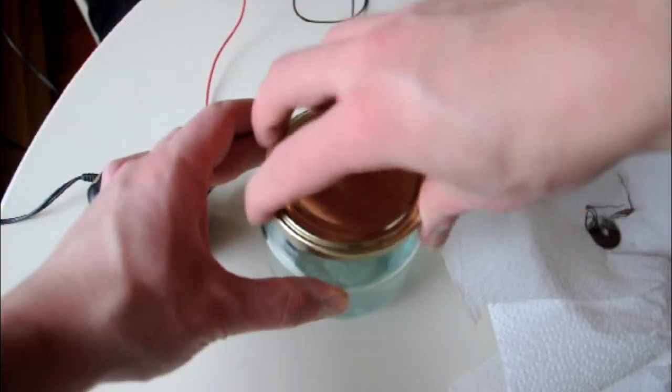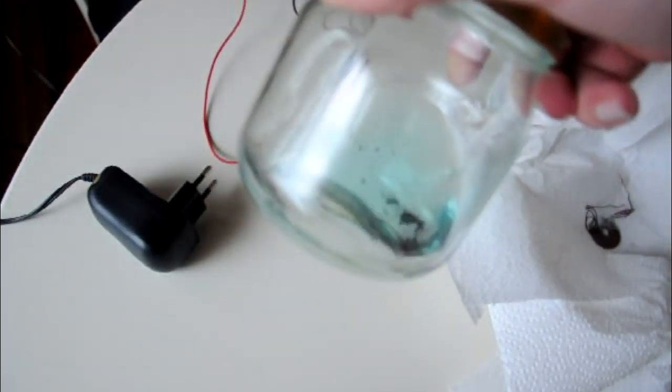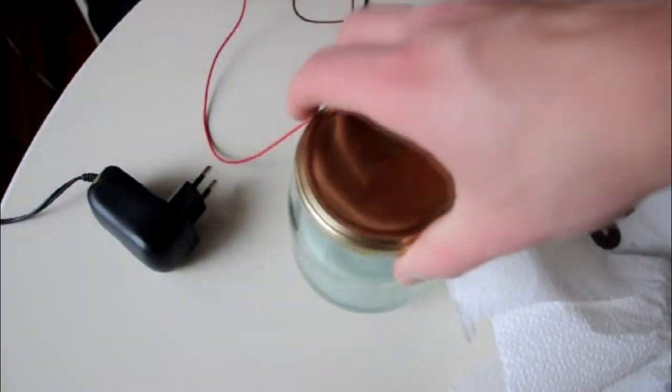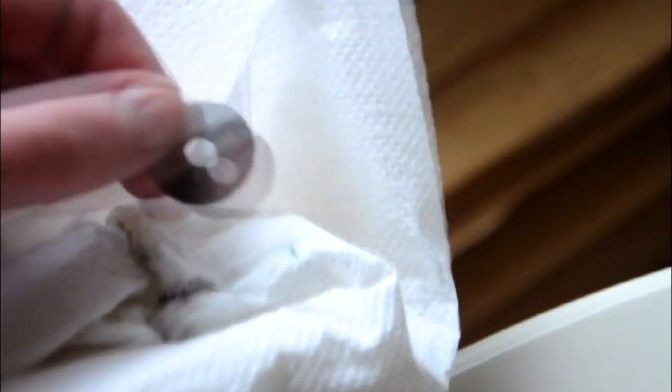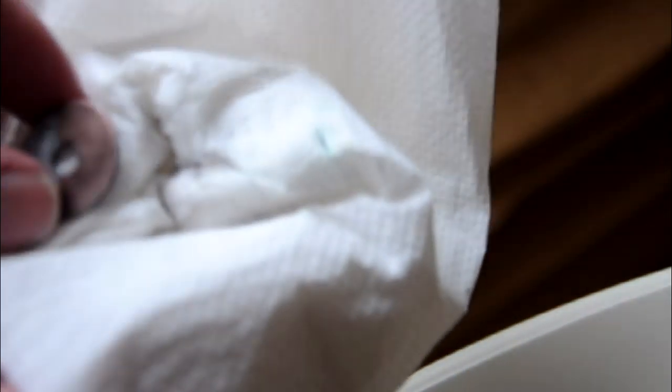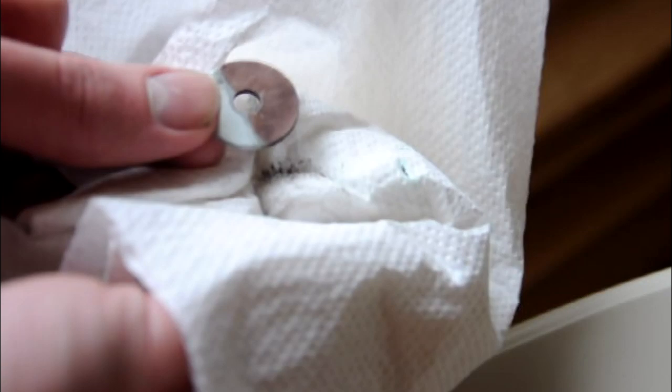Do not throw away the liquid into the sink since this liquid is highly dangerous for the environment. And here you can see the end result of our copper plating. If you want a shiny copper appearance, you need to polish the copper, but make sure that you are not polishing it too long since it's only a thin layer and will easily be removed.